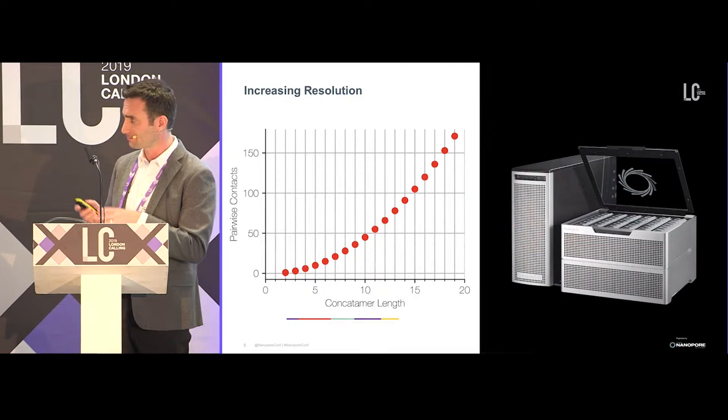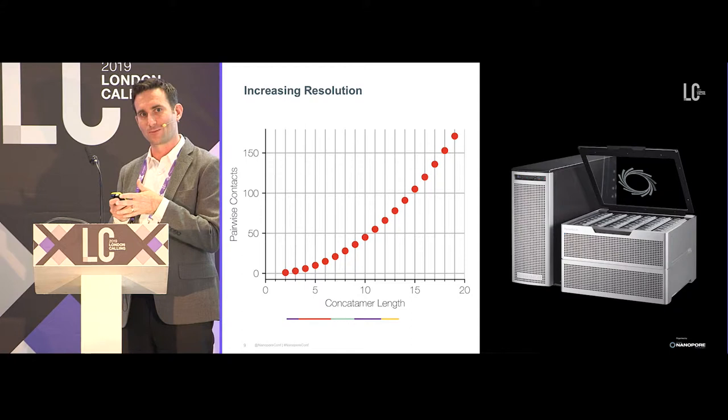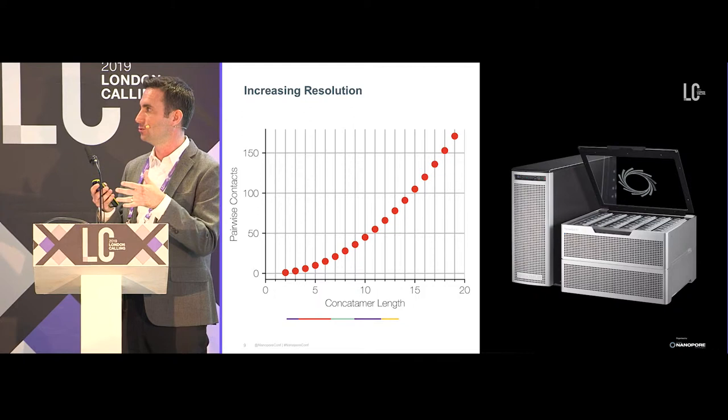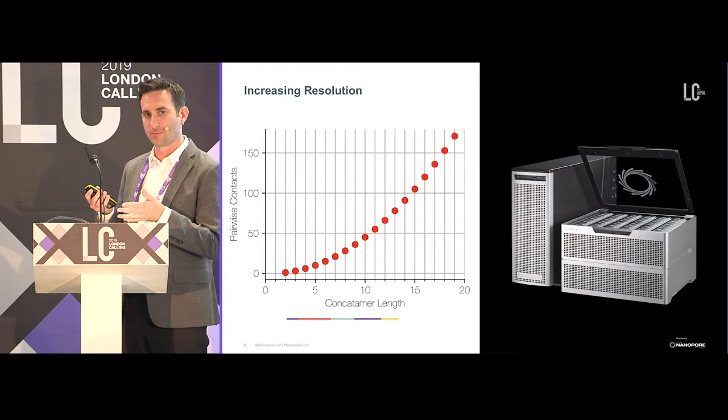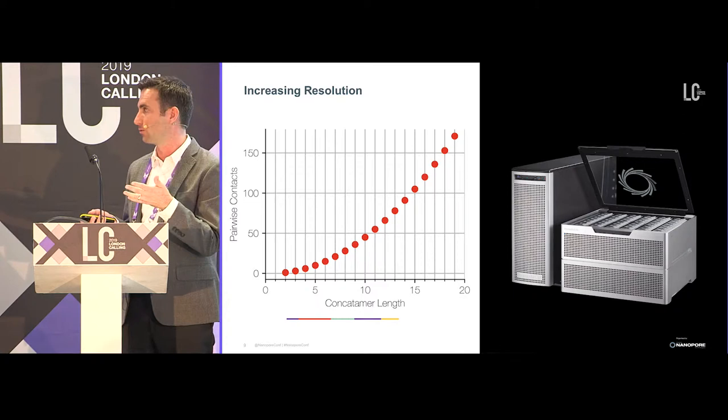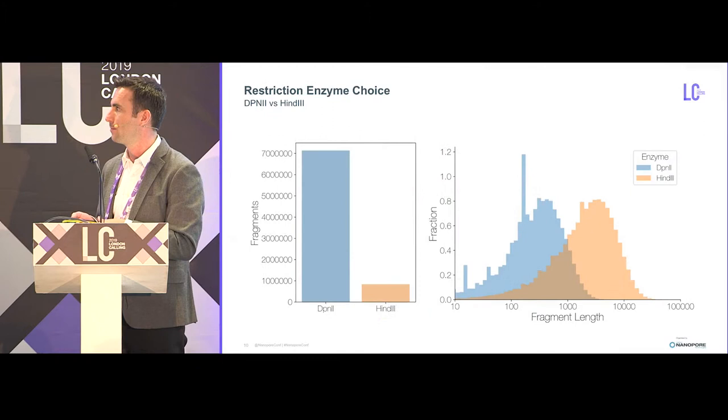To explain how shorter concatamer length can lead to higher resolution: if you treat a concatamer as a series of pairwise interactions, the number of pairwise interactions grows with the binomial coefficient n choose 2. With a concatamer length of 10, you get essentially 45 pairwise interactions; at 20, you get over 150 pairwise interactions. So you get a lot of information from one read, and when you couple that to the PromethION, you get a lot of data. That's part of the thinking around how increased resolution will come.